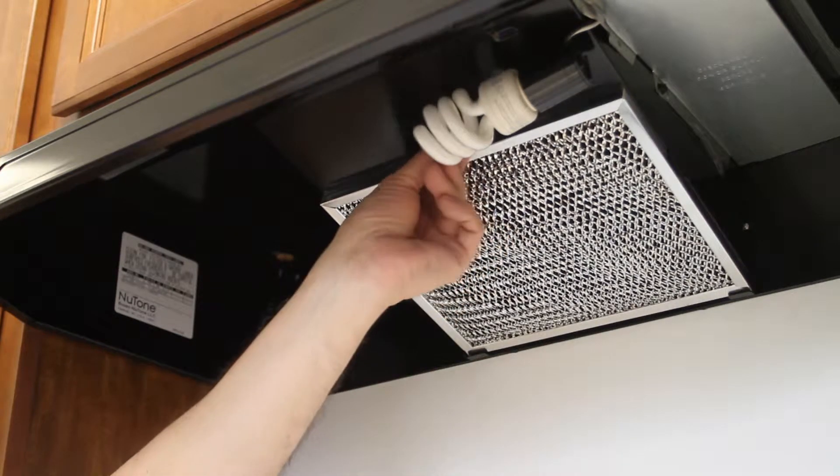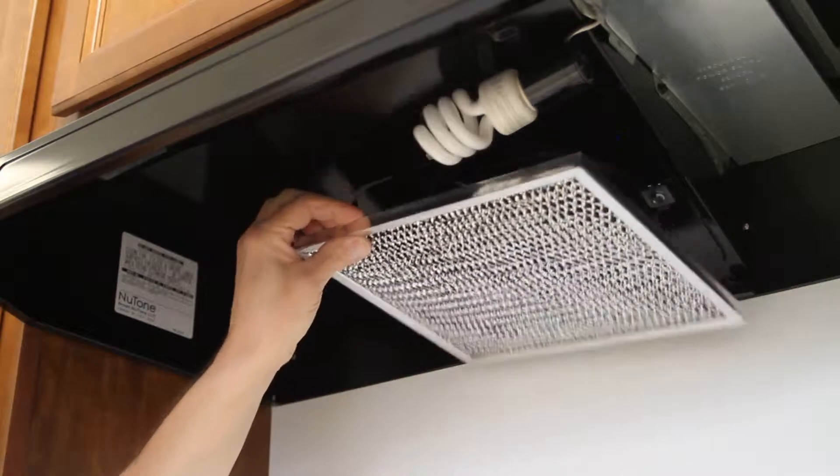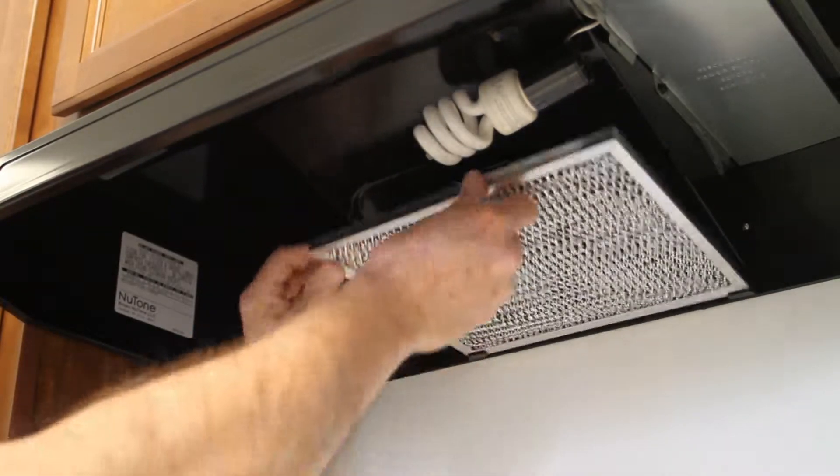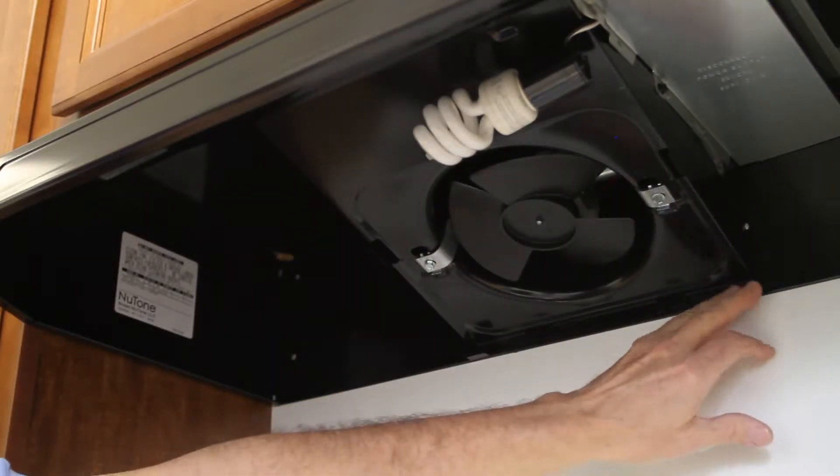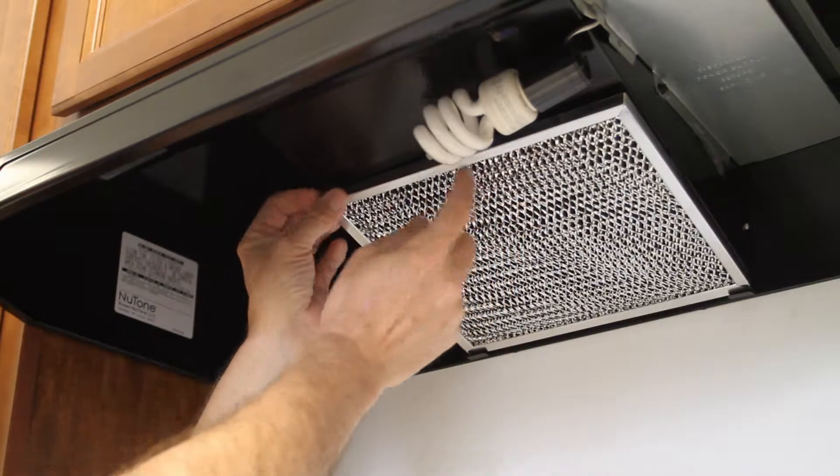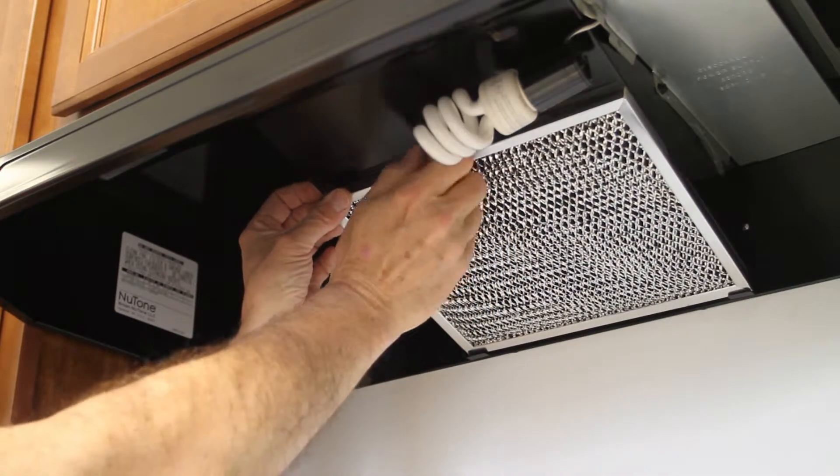Right here, there's a little twist catch that allows you to take this filter down. It was just sitting there on two little tabs. There's a tab here and a tab there, and it fits up here and it's held in place with a little green knob there.